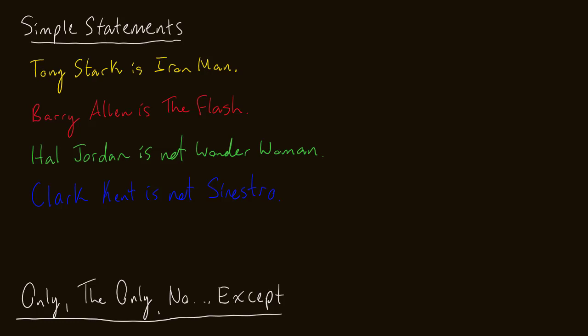So what are we doing today? Today, we are going to deal with the identity relation. And for that, what we're going to do is use an equal sign. So we start with simple statements — if I wanted to say Tony Stark is Iron Man, I'm going to use lowercase letters for Tony Stark and Iron Man, and I will simply say T is equal to I. The identity relation is the equal sign. I'm just saying Tony Stark and Iron Man are the same person, so T equals I.